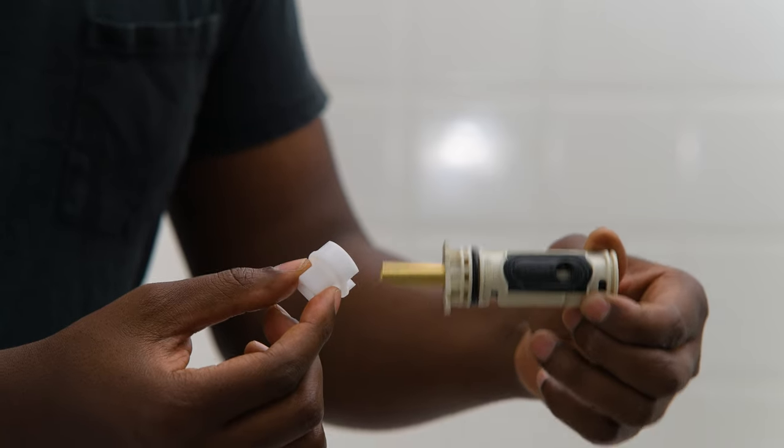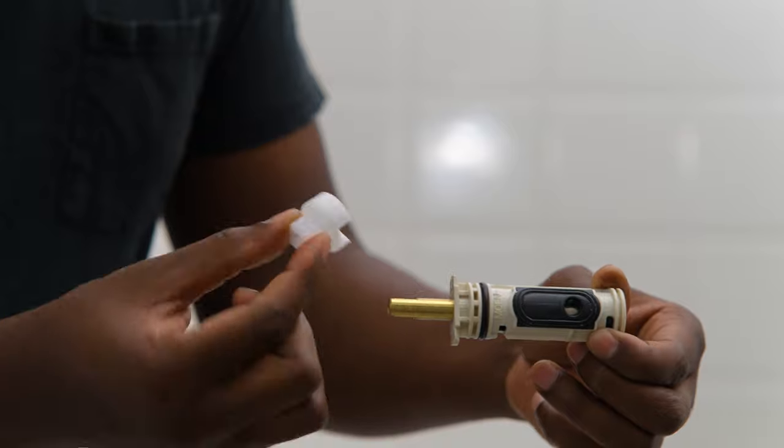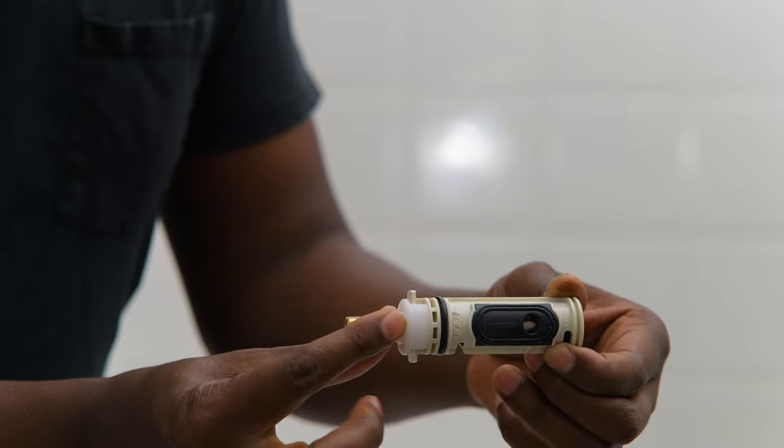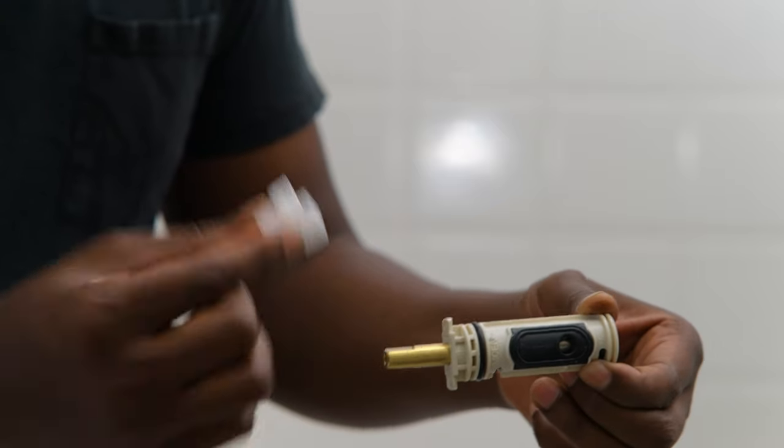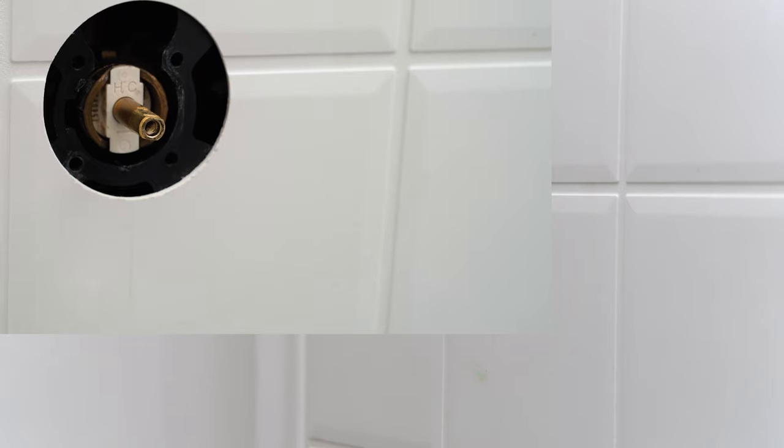So if you're not aware, when you get a new cartridge, Moen also supplies this little white piece. What you're supposed to do is slide this onto the cartridge and then take a pair of pliers and work it out. This piece is useless, I would never use it, so just get rid of it.